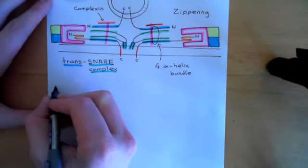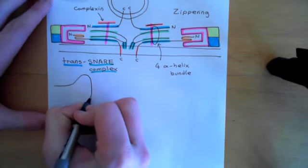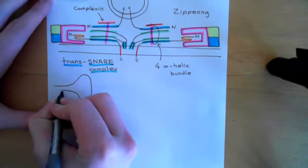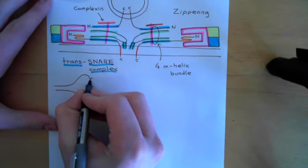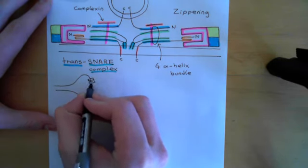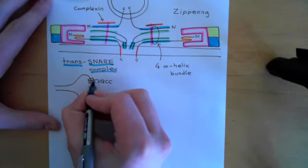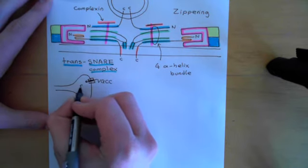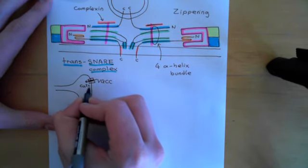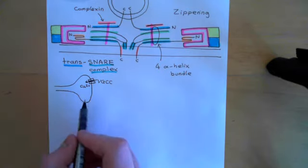When an action potential propagates into the axon terminal, it's going to open voltage-gated calcium channels in the membrane of the axon terminal. When the voltage-gated calcium channel opens, that's going to bring in calcium. And this calcium signal absolutely indisputably is the thing which triggers exocytosis of these primed synaptic vesicles that are attached to the presynaptic membrane.